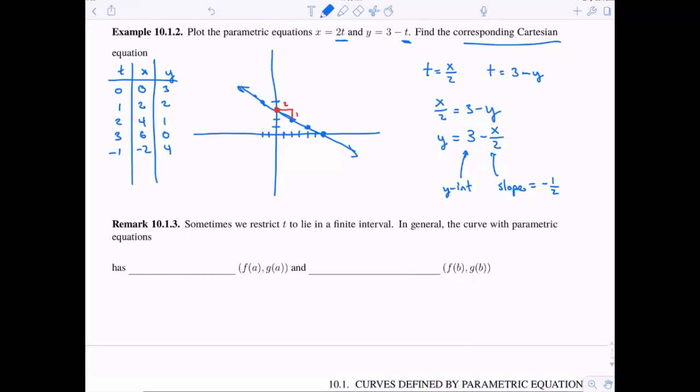Now, sometimes we restrict t to lie in a certain finite interval. So we don't have it continue on forever. So in this case, we still have the parametric equations x equals some function of time, y equals some other function of time. But then we restrict t to be between a and b.